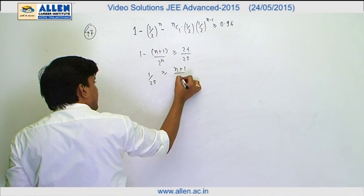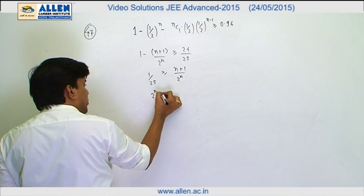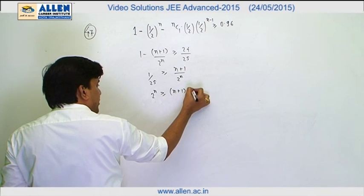Now we can simplify this and this is going to be 1 upon 25 is greater than equals n plus 1 upon 2 to the power n. Cross multiplying we get 2 raised to the power n, n plus 1, 25.